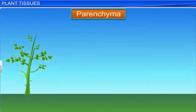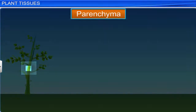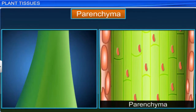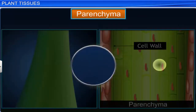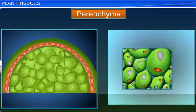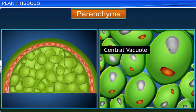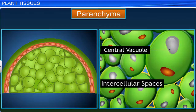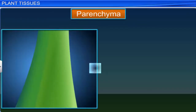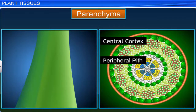The stem is made of the tissue parenchyma. Parenchyma consists of elongated living cells with a thin cell wall made of cellulose. These cells are polygonal in shape and have a large central vacuole. They also have intercellular spaces between them and are found loosely packed with unspecialized cells. Parenchyma forms the ground tissue in the central cortex and the peripheral part of stems and roots.